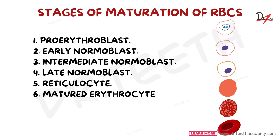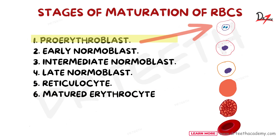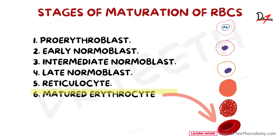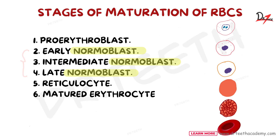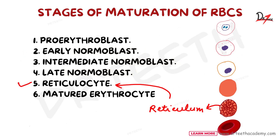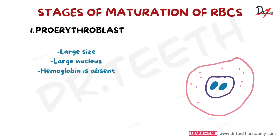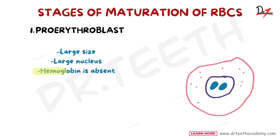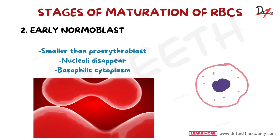The stages of erythropoiesis begin with the pro-erythroblast and end with the mature erythrocyte. The sequence is: pro-erythroblast, early normoblast, intermediate normoblast, late normoblast, reticulocyte, and matured erythrocyte. The pro-erythroblast is also known as megaloblast because it has a very large size — cell diameter of 20 micrometers. It has a large nucleus with two or more nucleoli, a chromatin network, basophilic cytoplasm, and hemoglobin is absent.